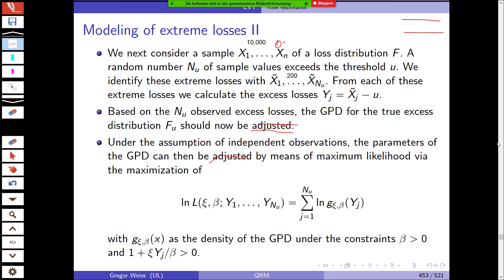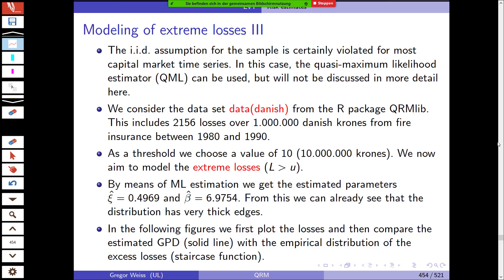So we insert our excess loss observations Y_j into the density function of a generalized Pareto distribution with xi and beta as parameters. We take the logarithm of these likelihoods and sum them up over all our excess losses. This gives us the log likelihood, which we maximize with respect to the two parameters xi and beta, under constraints like beta greater than zero.